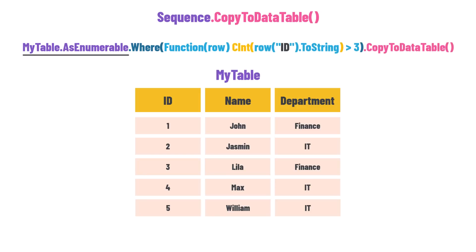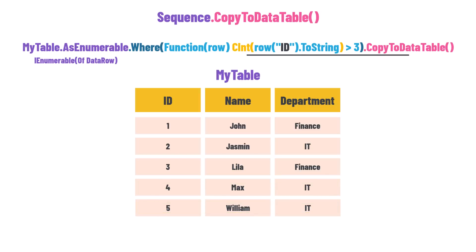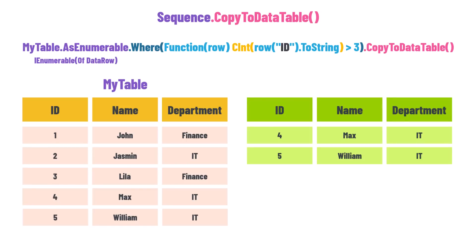I use the AsEnumerable method to convert the table to an IEnumerable collection, which means I now have an IEnumerable of DataRow collection. After that, I use the Where method to filter the table. This method filters the table and returns only the last two rows where the ID is greater than three. So now I have an IEnumerable of DataRow collection containing only those two rows, and I use CopyToDataTable to convert this collection into a DataTable again.